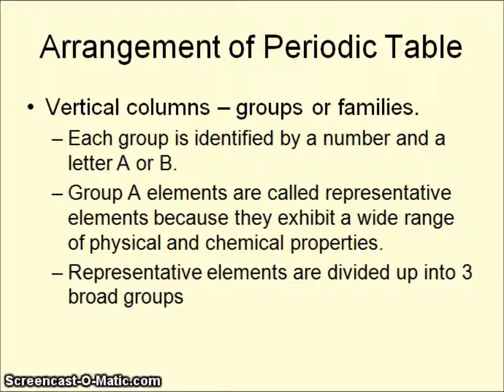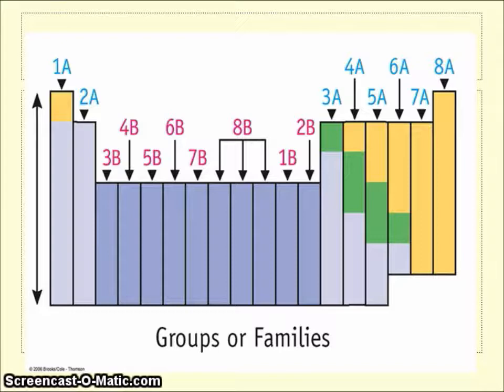This leads to the important consequence that elements with similar physical and chemical properties end up in the same column. Our vertical columns are called groups or families — rows across are periods, but columns go up and down. Each group is identified by a number and a letter, and you have two main groups: Group A elements and Group B elements. Group A elements exhibit a wide range of chemical and physical properties, while Group B elements tend to be very similar. Those Group A representative elements are divided into three broad categories.